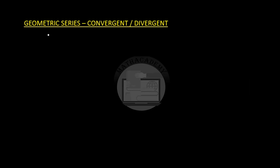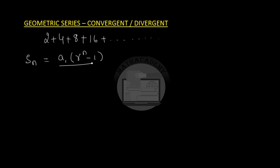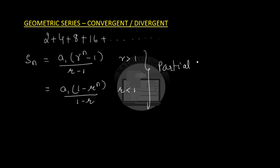For the series 2 + 4 + 8 + 16 + ..., the partial sum formula for a geometric series is: S(n) = a · (r^n - 1) / (r - 1) when r is greater than 1, or S(n) = a · (1 - r^n) / (1 - r) when r is less than 1. We can use this formula to find the sum of 5, 6, 10, 20, or 100 terms. But what if we have to find the sum of an infinite number of terms?